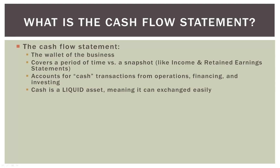The cash flow statement accounts for cash transactions that come from the operating activities of the business, the financing activities of the business, and the investing activities of the business. We put cash in quotes because we're not talking about business persons exchanging suitcases of $100 bills — not pure cash necessarily. Every cash transaction has to do with one of the three primary business activities: operations, financing, and investing. One of the important things about the cash flow statement is that it categorizes all cash transactions into those three activities.